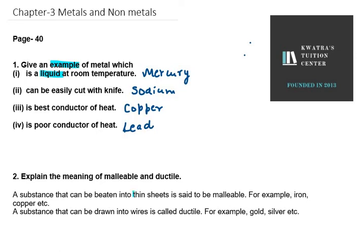If a substance can be converted into thin sheets, it has the property called malleable. All metals like iron, copper, and aluminum are good examples. We see aluminum foil paper — that comes under malleable, because it is converted into thin sheets.